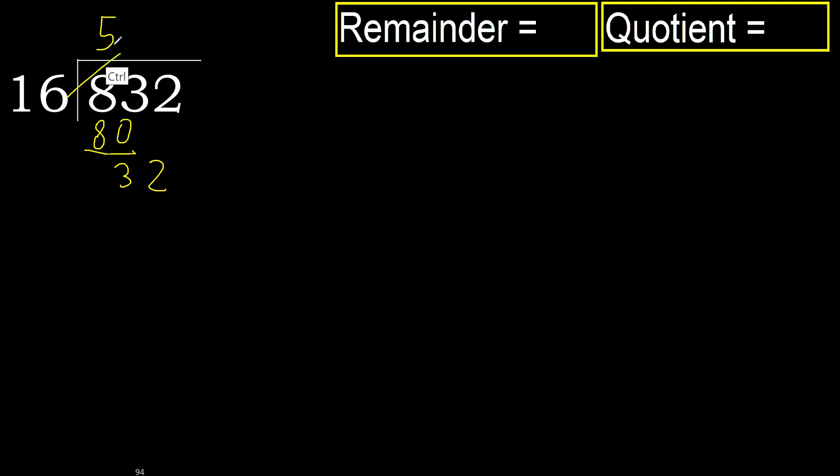16 multiplied by 2 is 32. 32 is not greater.